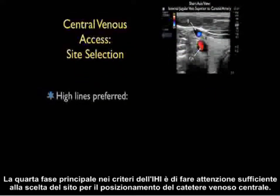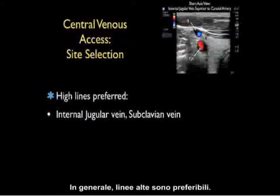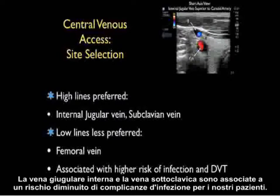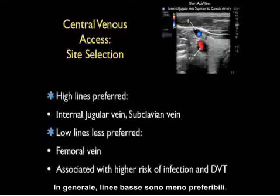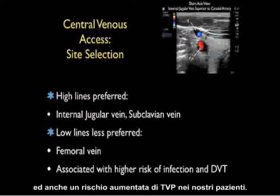The fourth main step is adequate attention to site selection for placement of the central venous catheter. In general, high lines are preferred — the internal jugular vein and subclavian vein are associated with a decreased risk of infectious complications. Low lines are less preferred, as placement of a catheter into the femoral vein is associated with a higher risk of infection and a higher risk of DVT.